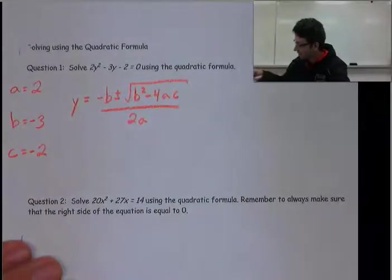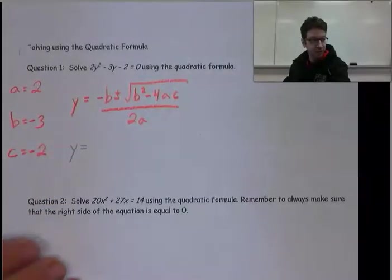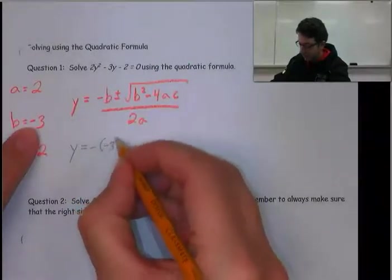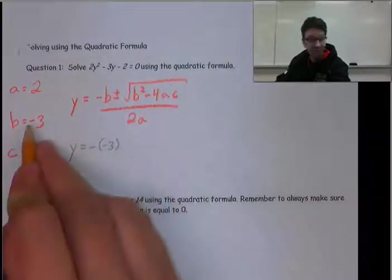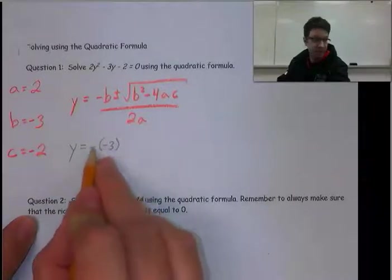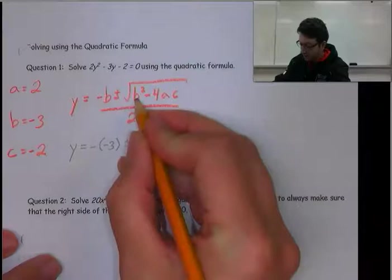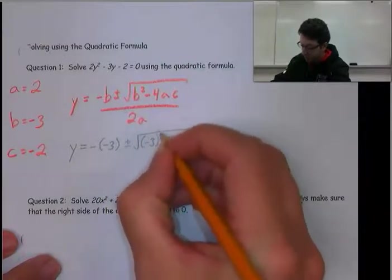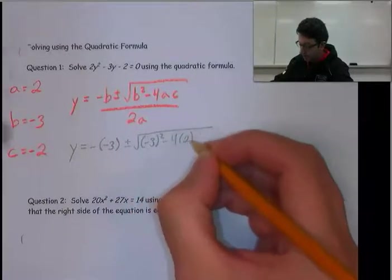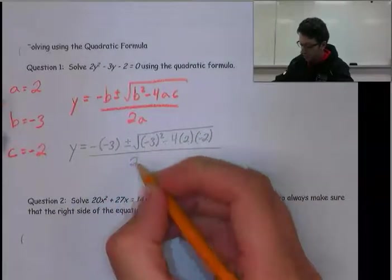Once we have our coefficients, I prefer to use a regular pencil to write it smaller. y = -(-3) - if you get a negative value for a coefficient, it might help to throw that in a bracket so you recognize that's a double negative that will turn positive. Plus or minus the square root of (-3)² - 4(2)(-2), all divided by 2(2).